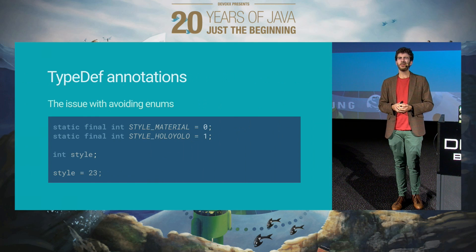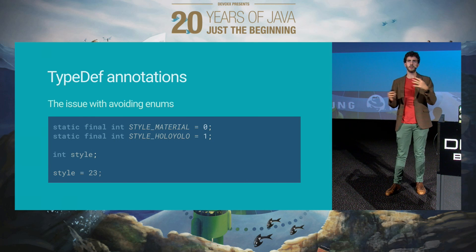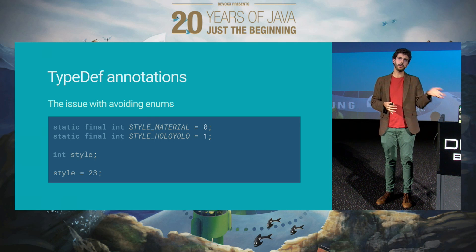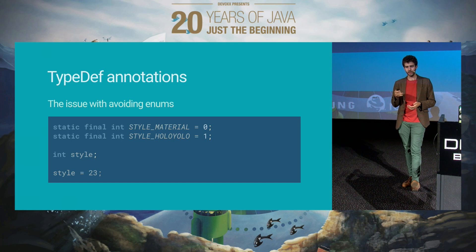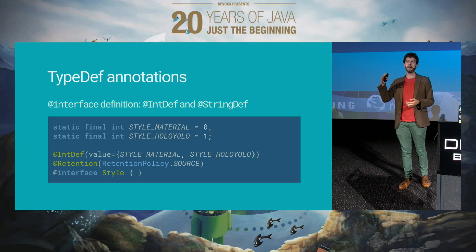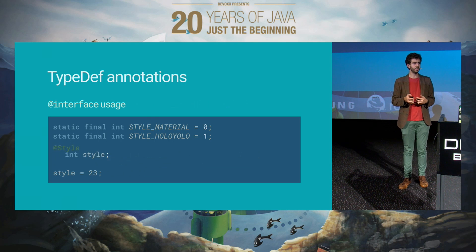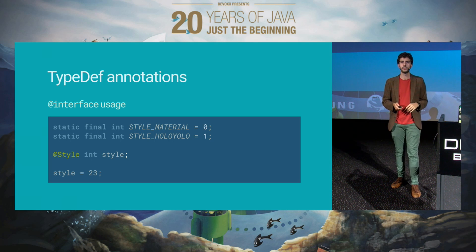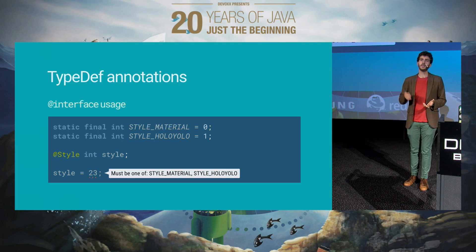You may have heard about the IntDef versus enums debate that has been going on. There are good reasons to use enums, and good reasons not to. If you don't use enums but don't want to lose type safety, you can use a typedef annotation — @IntDef — which allows you to define another annotation that is then used in your main code to say: this integer is actually supposed to be of that kind and can only have those values. This also works for strings with @StringDef. If you use a value that is not correct, the IDE will be able to warn you.